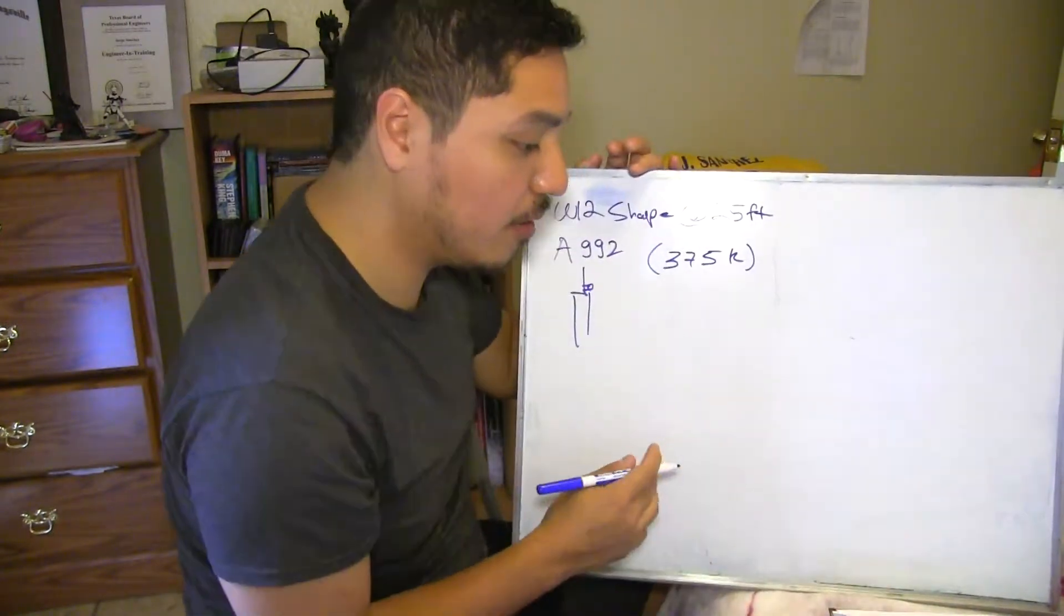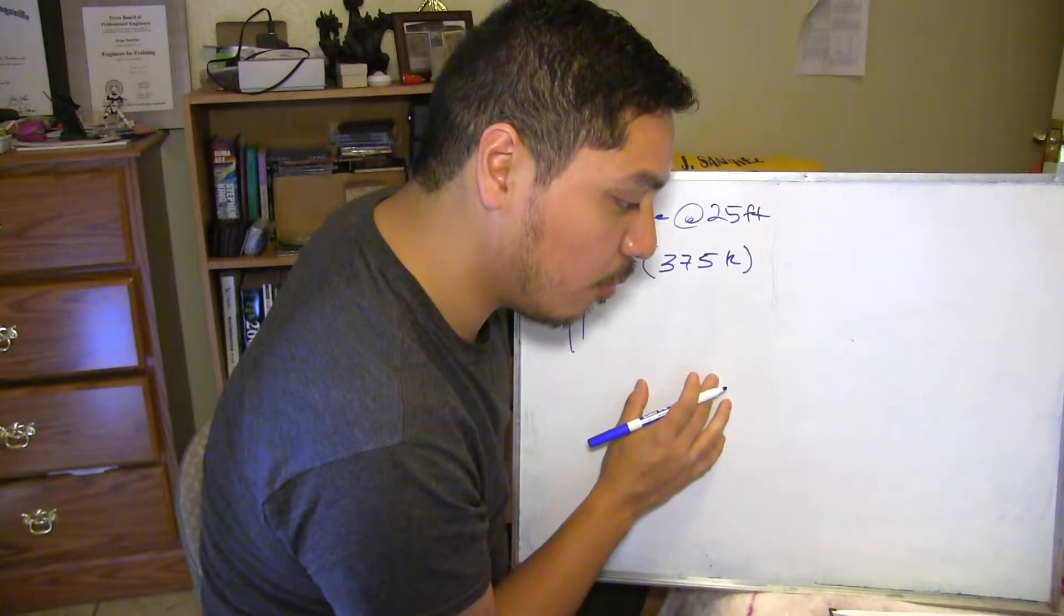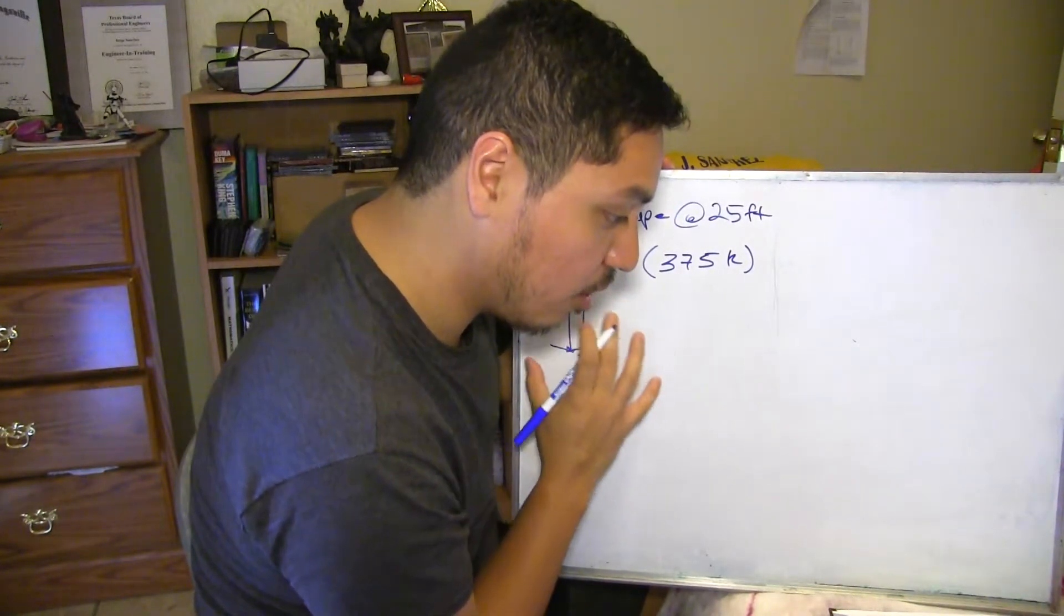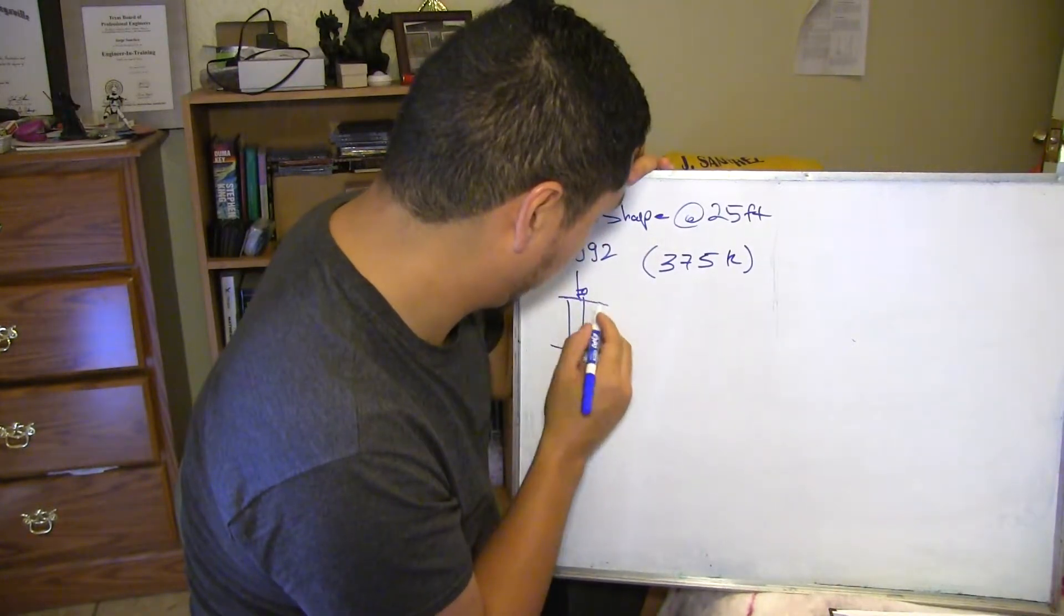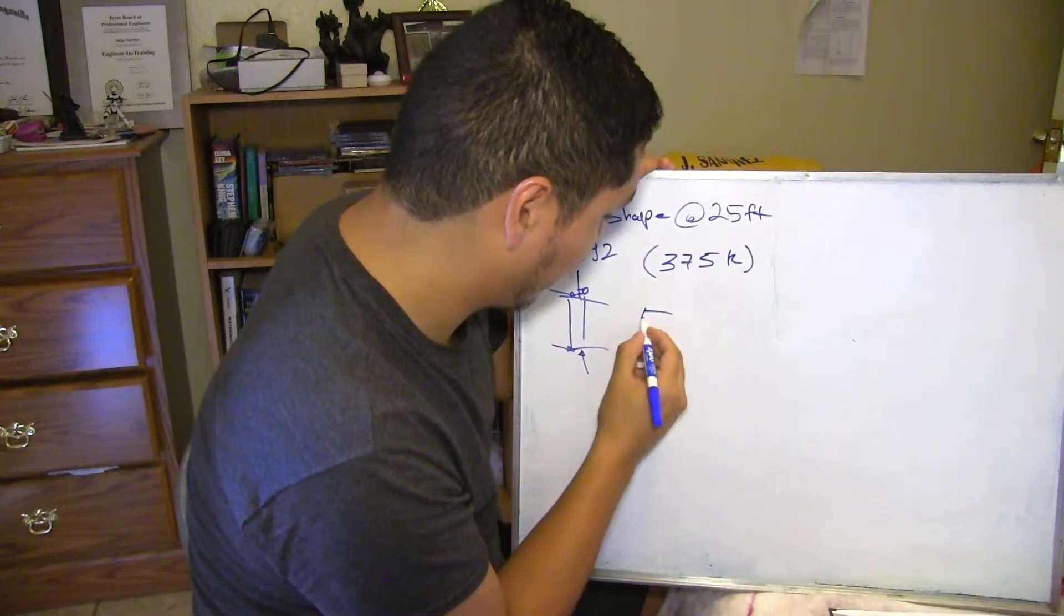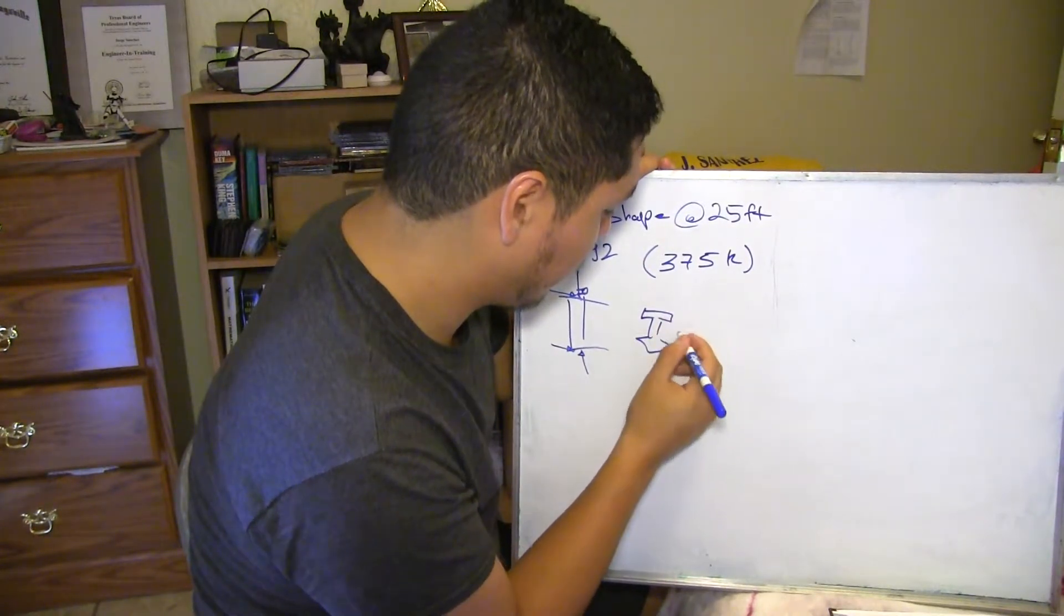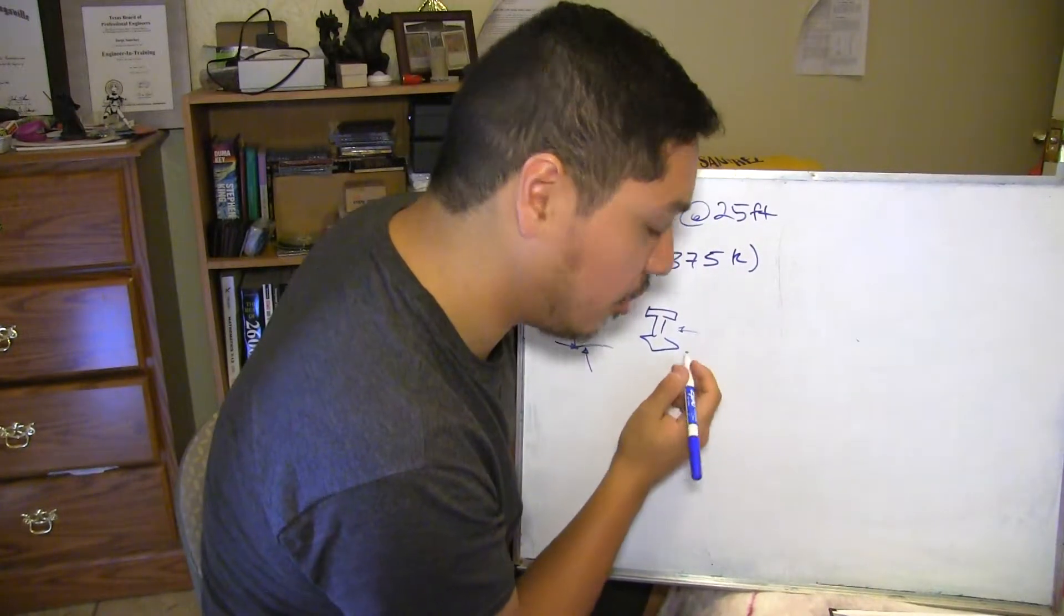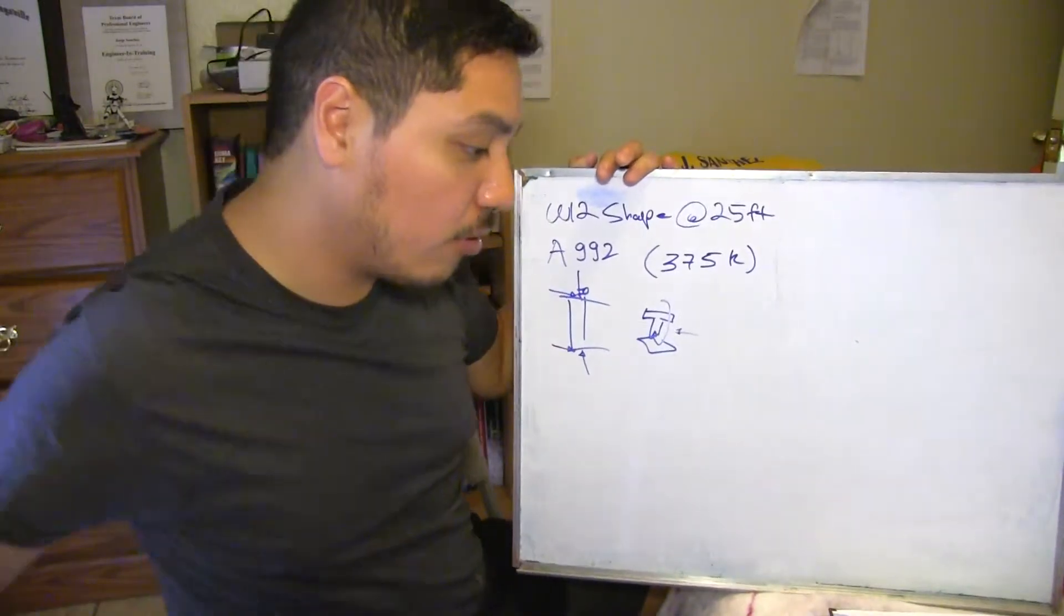And in this sample problem statement, we say that the base of the column is rigid frame in both directions, so it basically is connected in both directions so it cannot move. The top is rigidly framed in the weak direction. So you have the section in the weak direction, probably this one or this one. And fixed against rotation in the strong direction. So like this, I think. So those are your parameters.